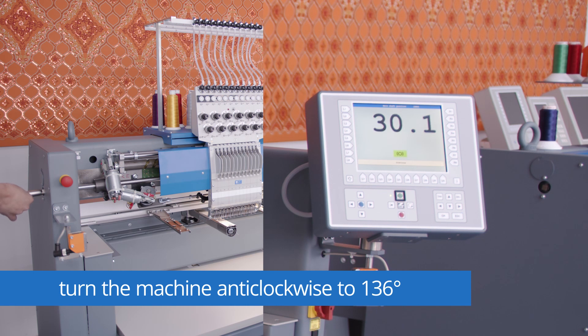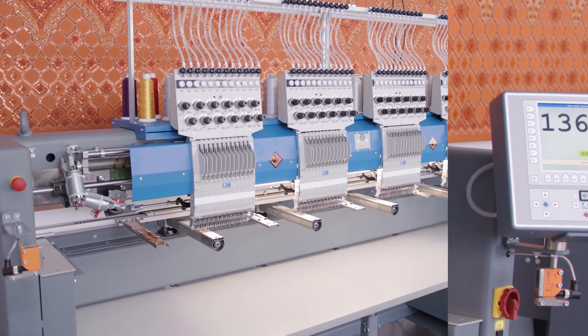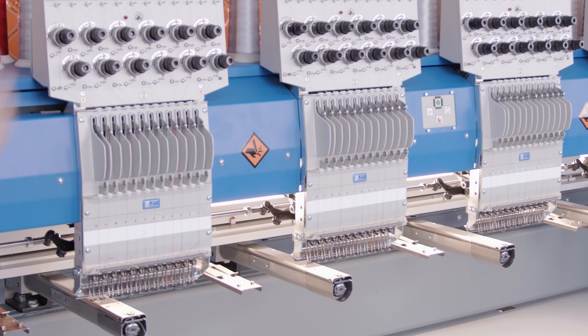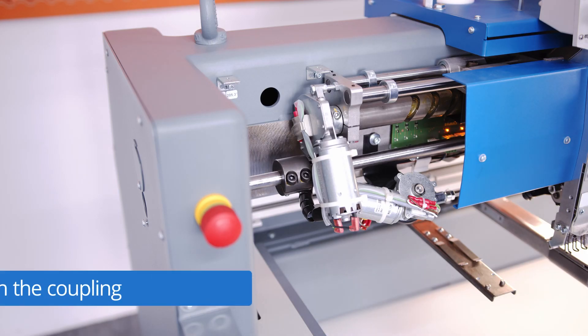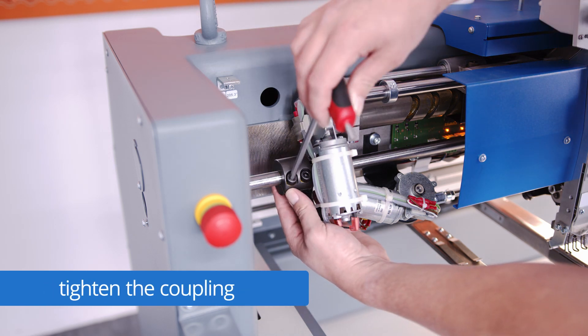If you're at 136 push the right button next to the SK logo, the jogging button to switch on the brake. After bringing the machine to 136 degrees and switch on the brake, we have to tighten the coupling again.